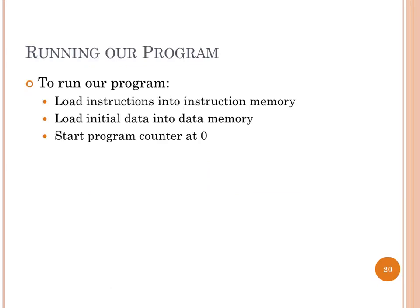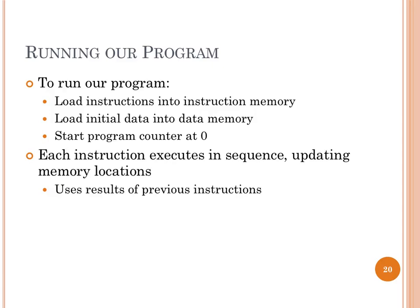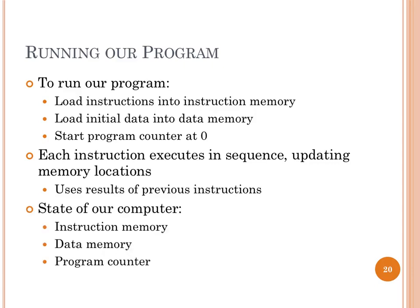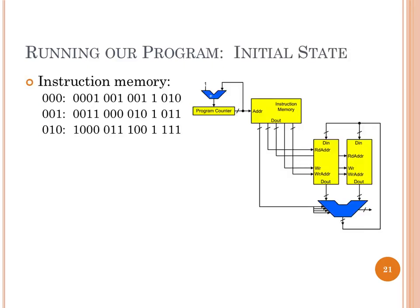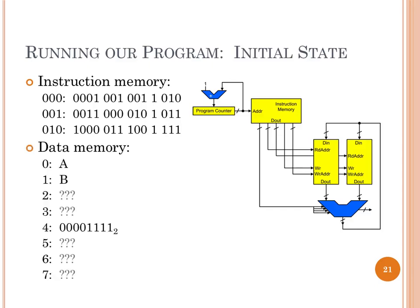Let's simulate running our program. We need three instructions in instruction memory, our initial data values (A, B, and the bit mask loaded), and the program counter initialized to zero. The instructions execute in sequence, updating memory locations. On the first clock tick, the program counter outputs zero, instruction memory outputs the first instruction, both data memories get address 1 (where B is), both ALU inputs are B, and the control inputs say add — so 2B comes out the bottom of the ALU and gets stored at address 2.